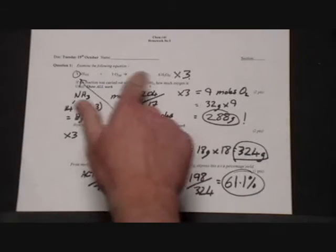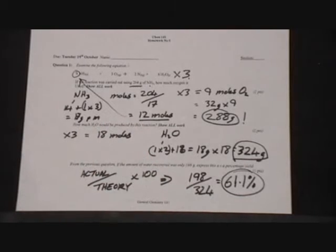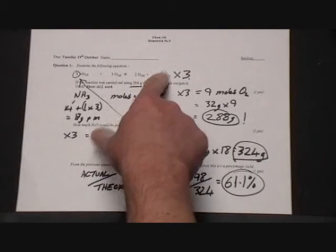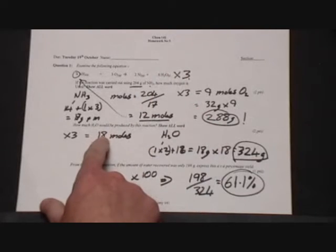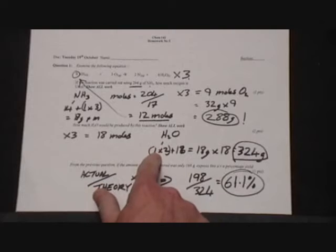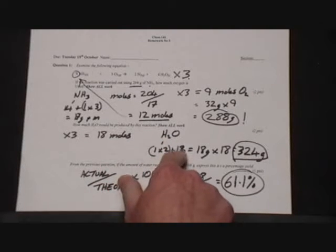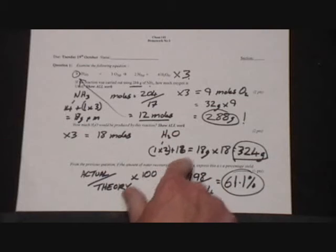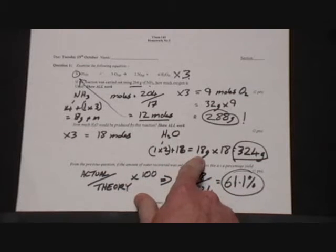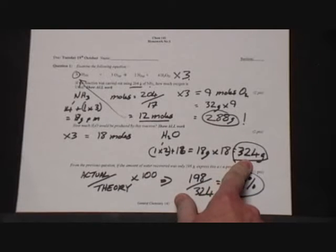So using these proportions, for the amount of water which would be produced, if the original equation produces six moles, three times more would be 18 moles. From the formula, one mole of water, one times two for hydrogen plus the 16 for oxygen, one mole is 18 grams. So 18 moles is 324 grams.